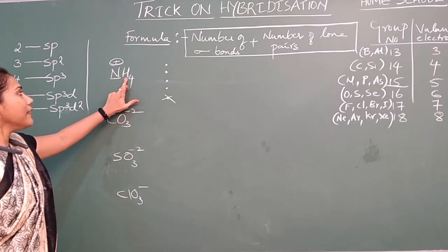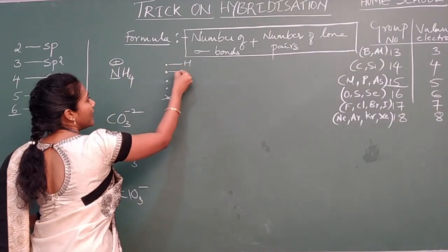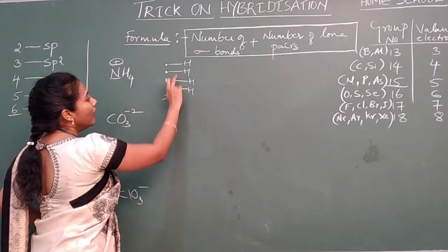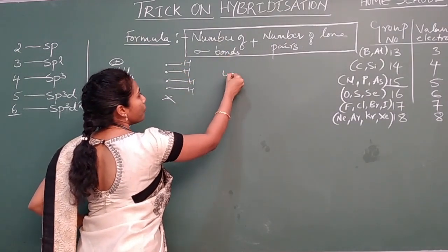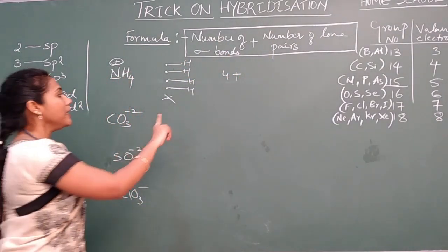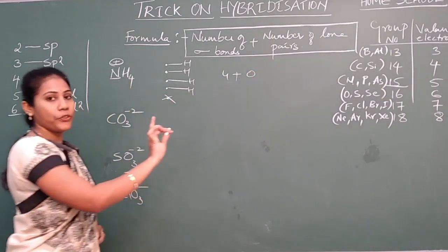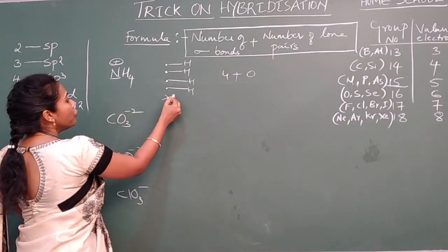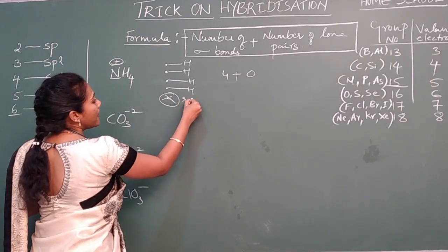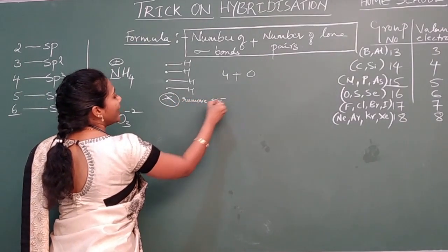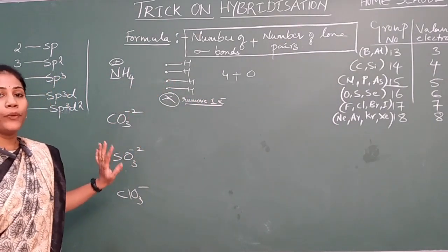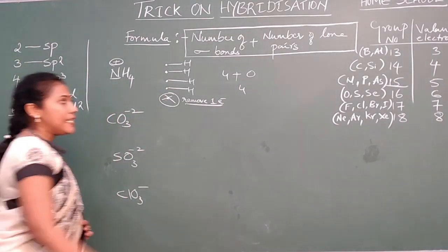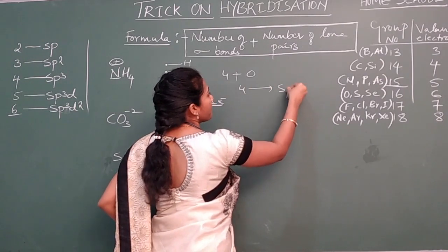With 4 hydrogens, each hydrogen takes up 1 electron forming 1 sigma bond, giving 4 sigma bonds. Applying the trick: sigma bonds = 4, lone pairs = 0, so 4 plus 0 = 4. Whenever plus is there, remember to remove one electron before applying the formula. If you get a digit 4, it is SP3 hybridization. So NH4+ has SP3 hybridization.